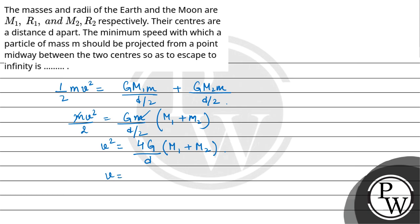Velocity will be equal to under root 4 G by d M1 plus M2. This is the minimum speed with which a particle should be projected from midpoint to escape to infinity.